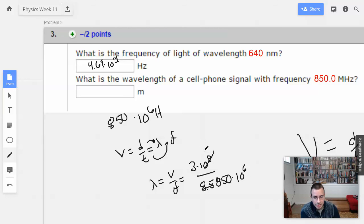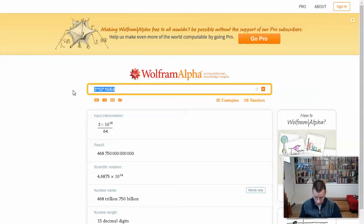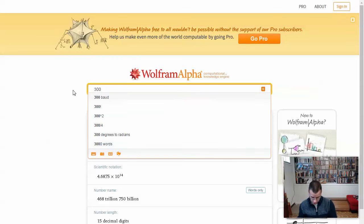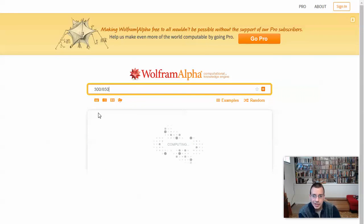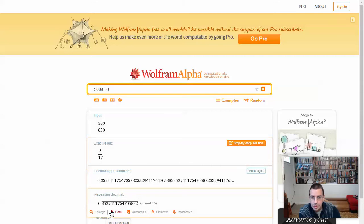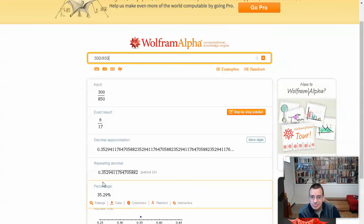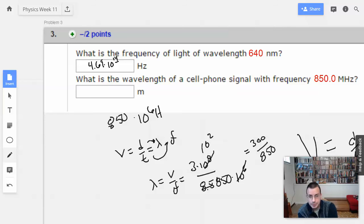Cancel this out, it'll be 10 squared. Now we're gone. So 300 divided by 850. 300 divided by 850, and we get, I'll say 0.353 meters, which seems reasonable.